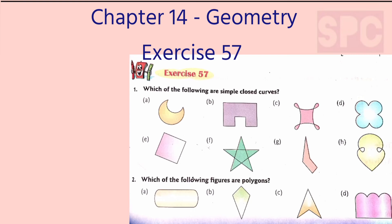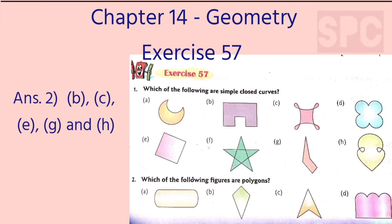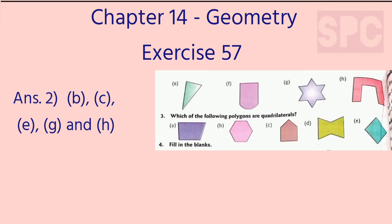Question 2: Which of the following figures are polygons? We know that polygons are simple closed figures formed of three or more line segments. Here we can see that figures B, C, E, G, and H are made of either three or more than three line segments, so these are the polygons.